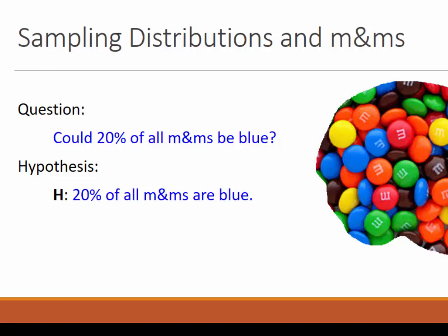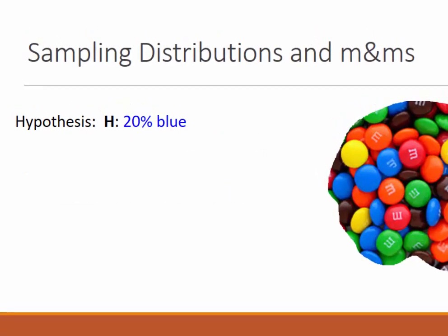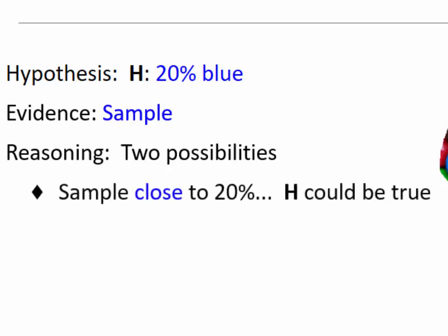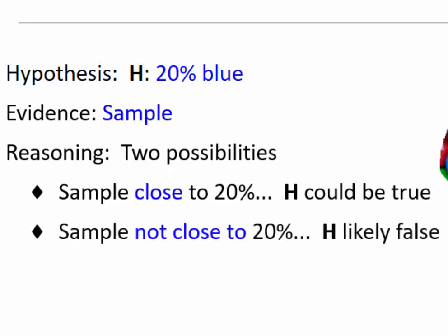The evidence we use will be from a real random sample of M&Ms. Then we will reason that there are two possibilities. If the sample's proportion is close enough to 20%, then we will infer that the population's proportion of blue M&Ms could also be 20% — that the hypothesis could be true. On the other hand, if the sample proportion is not close to 20%, then we will reject the hypothesis since it is likely to be false.